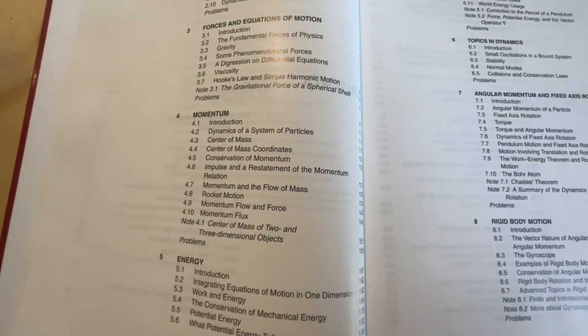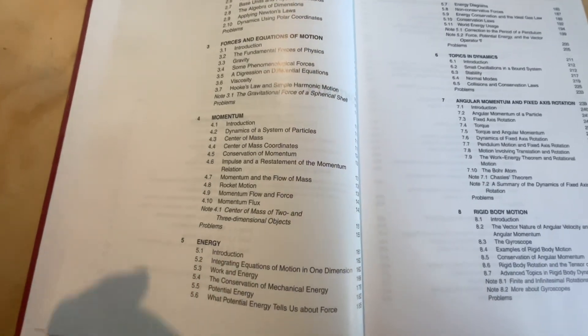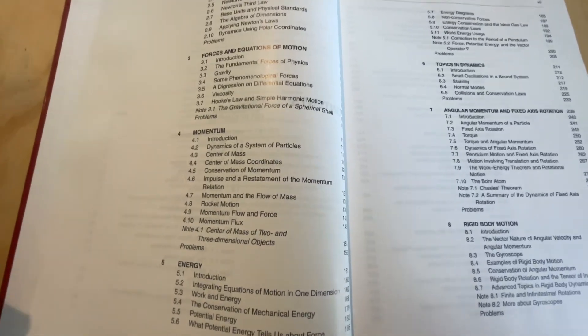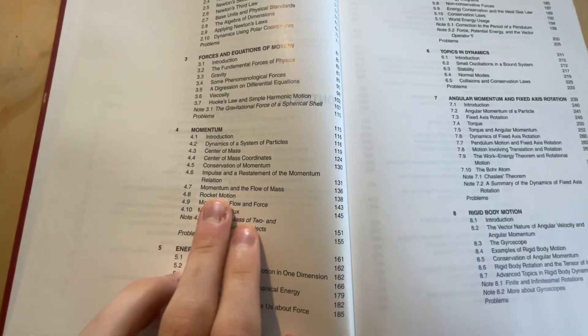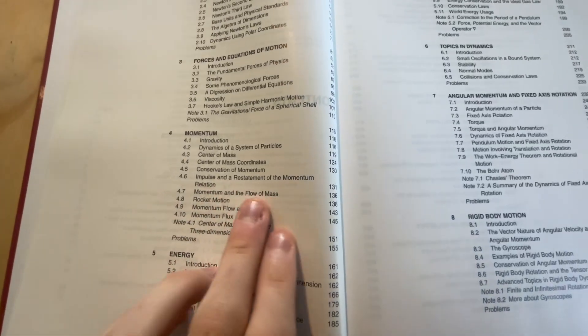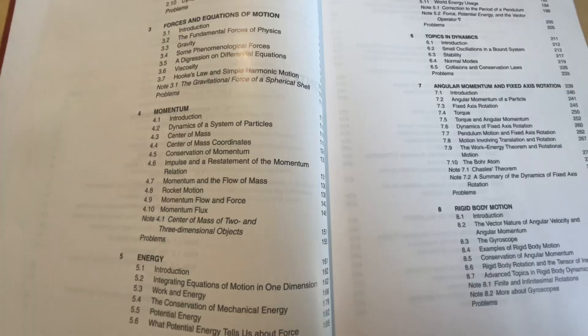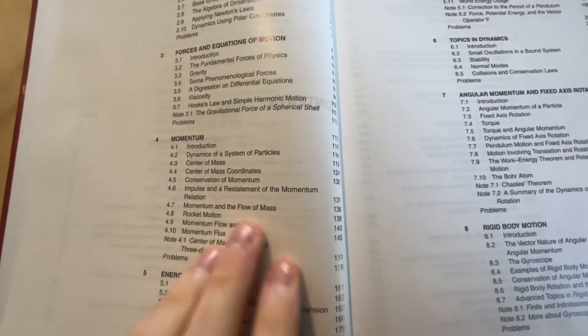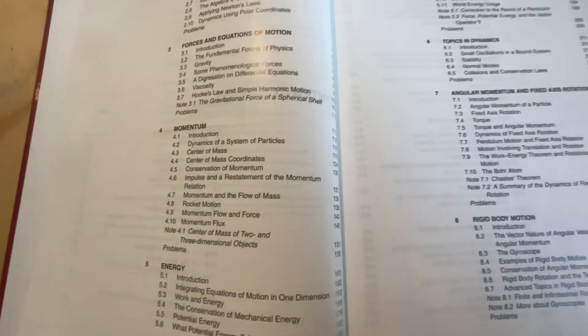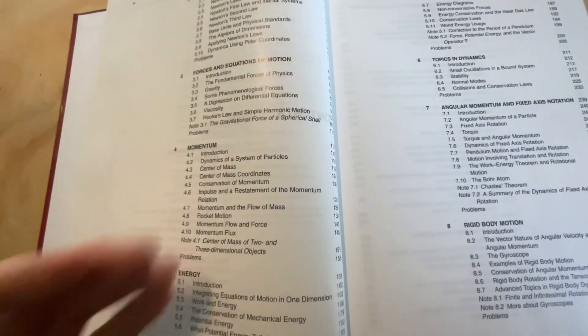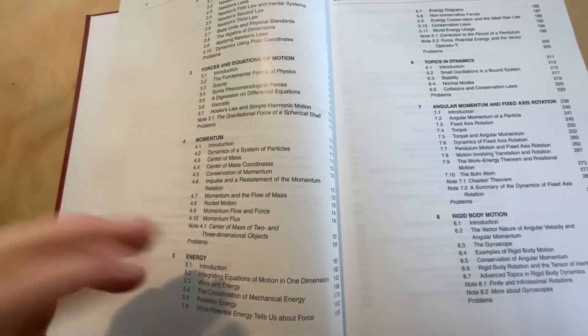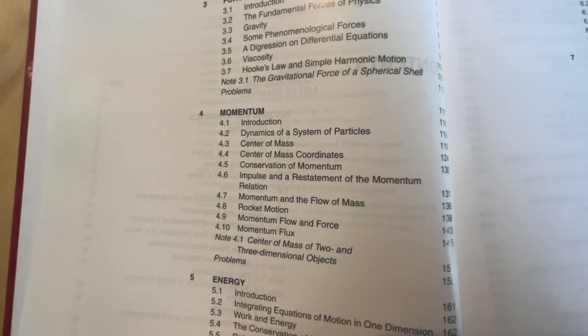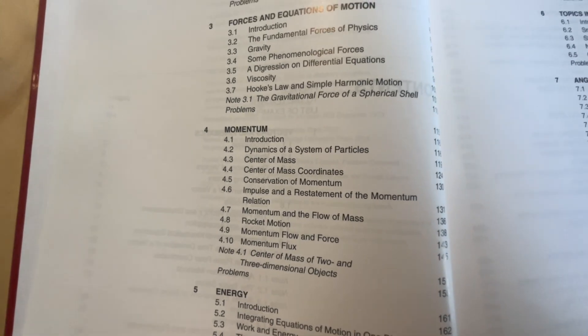Next up we've got momentum. Now this is a bit of an interesting chapter also, because I feel like this does cover a lot more content than an introduction book typically does. For example, it covers stuff like rocket motion and momentum in the flow of mass. This is typically reserved for a second course in classical mechanics, more likely a book like Taylor. You'll first encounter stuff like rocket motion and the flow of mass, but in this book it of course covers it. This is why I don't think it's so much of an introduction book. We've got some interesting topics here. We've also got momentum flux, conservation of momentum, and center of mass also.